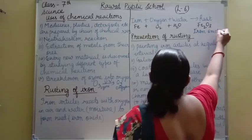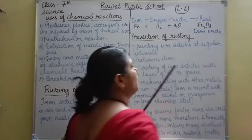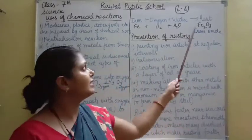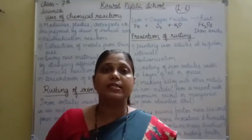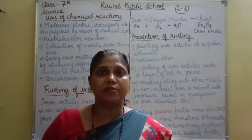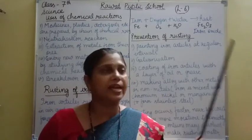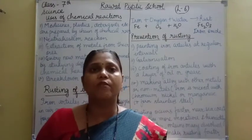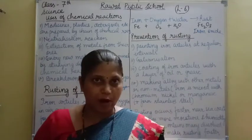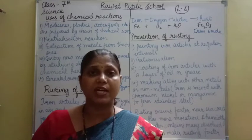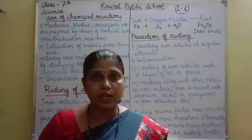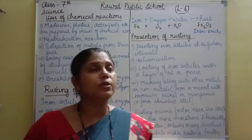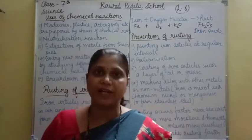So if anyone asks you: what is the formula of rust? Formula of rust is Fe2O3. And what is the name of rust? Rust ko hum iron oxide kehte hai. Junk — the brownish layer that forms on any iron article — woh brown color ka hota hai. Woh iron oxide hota hai.